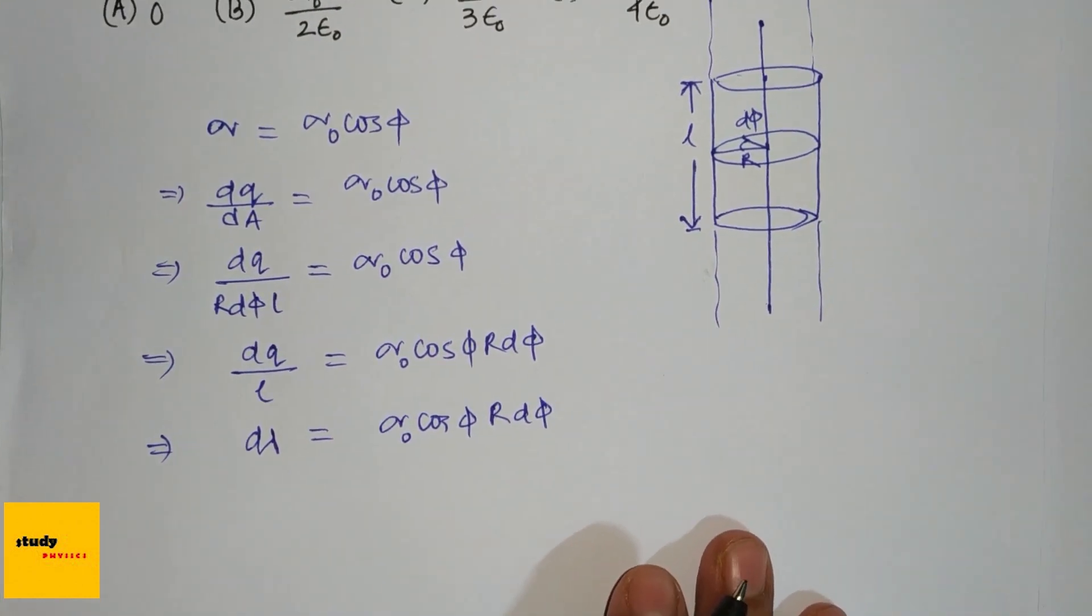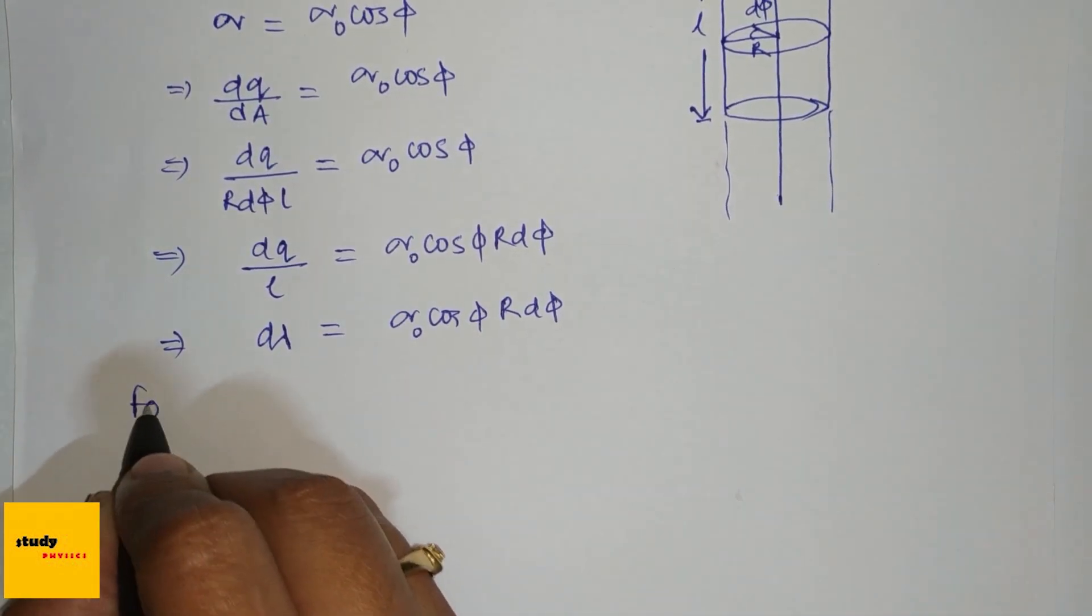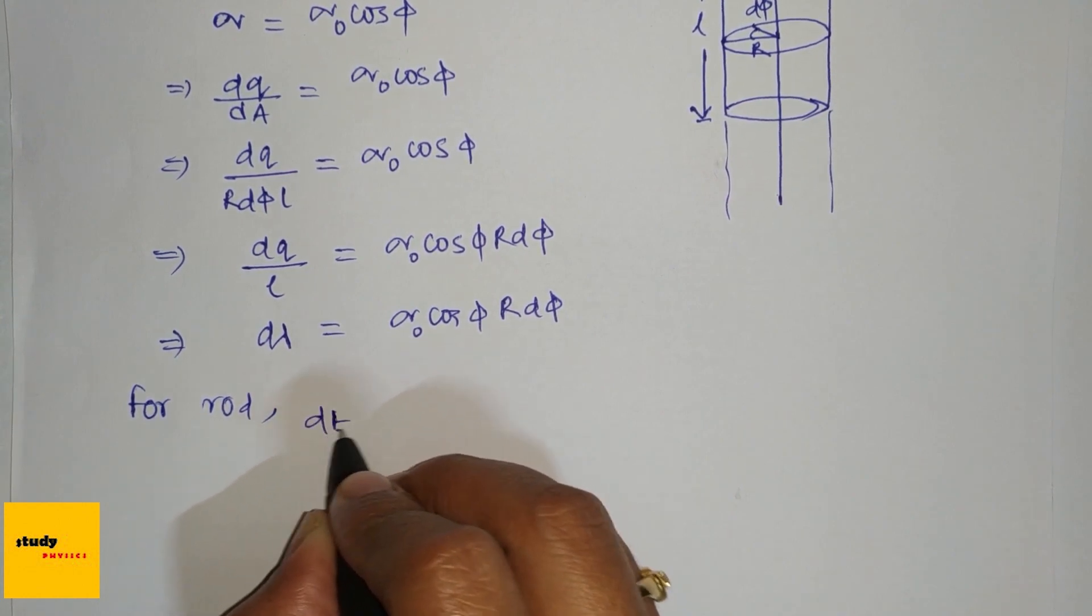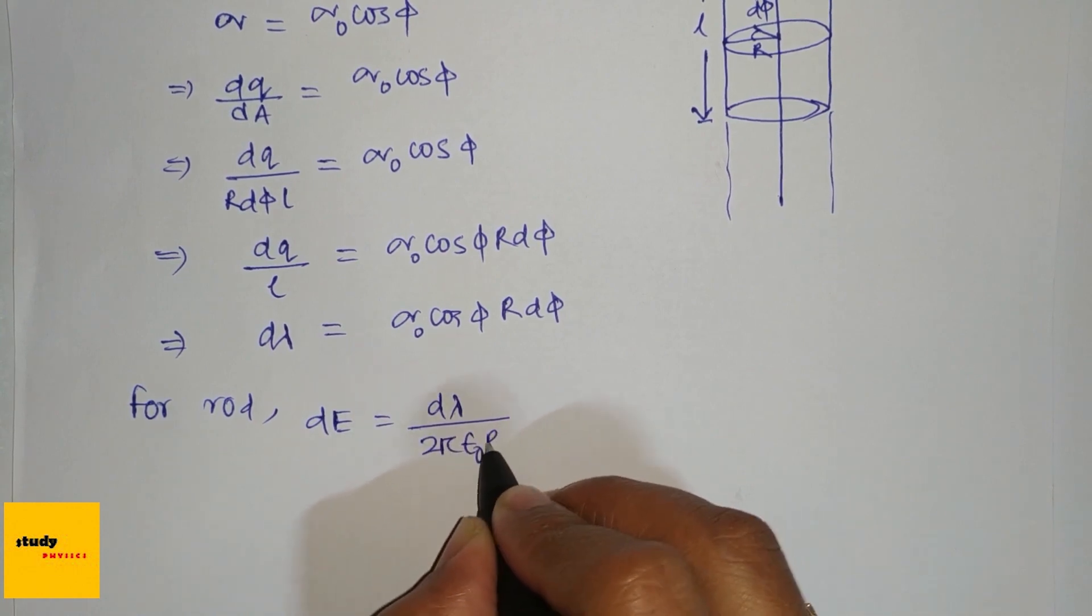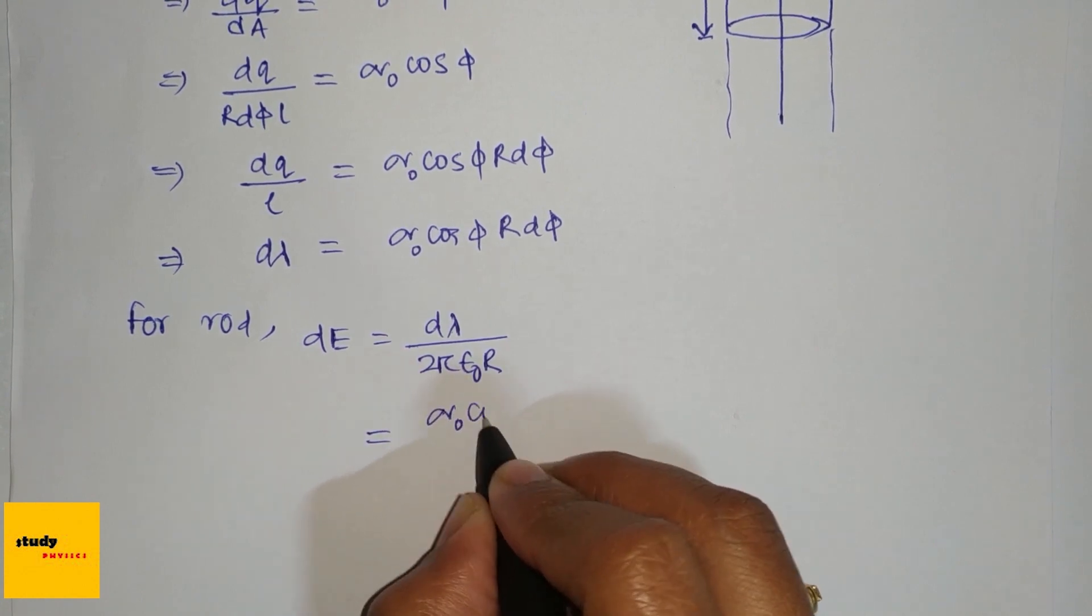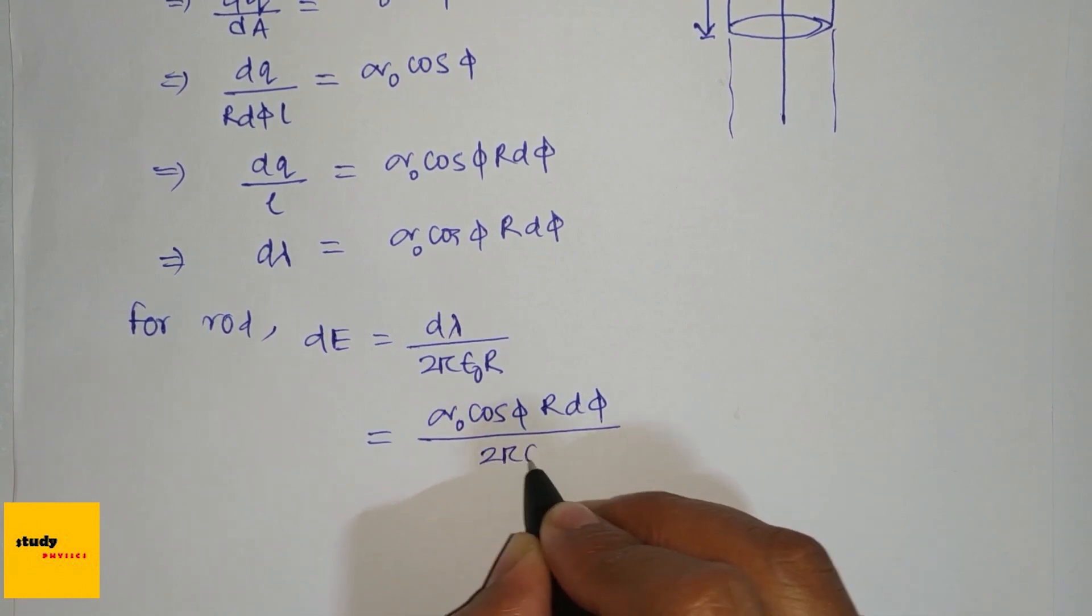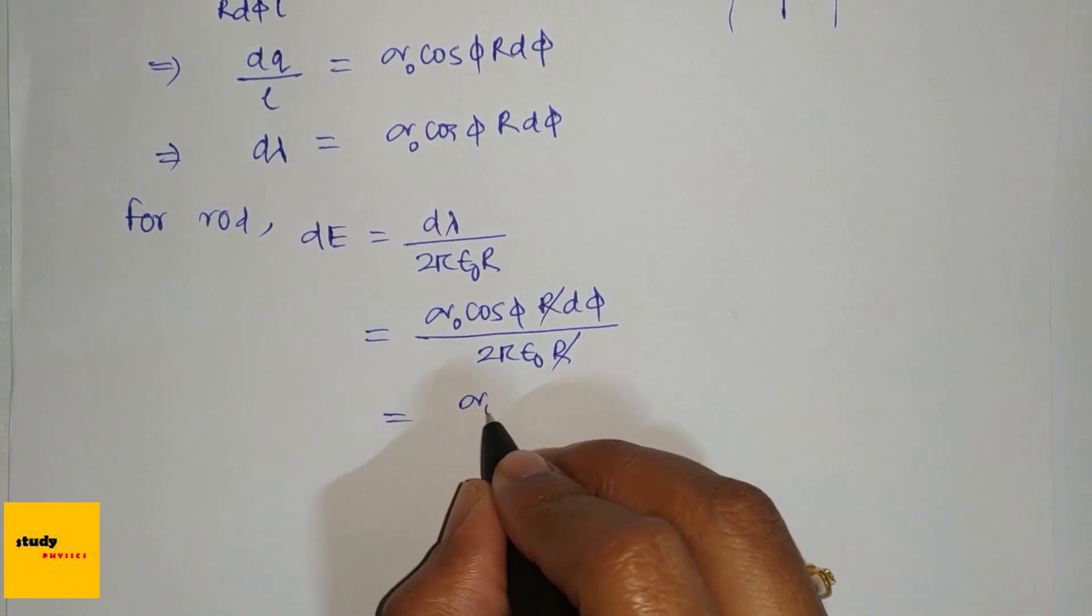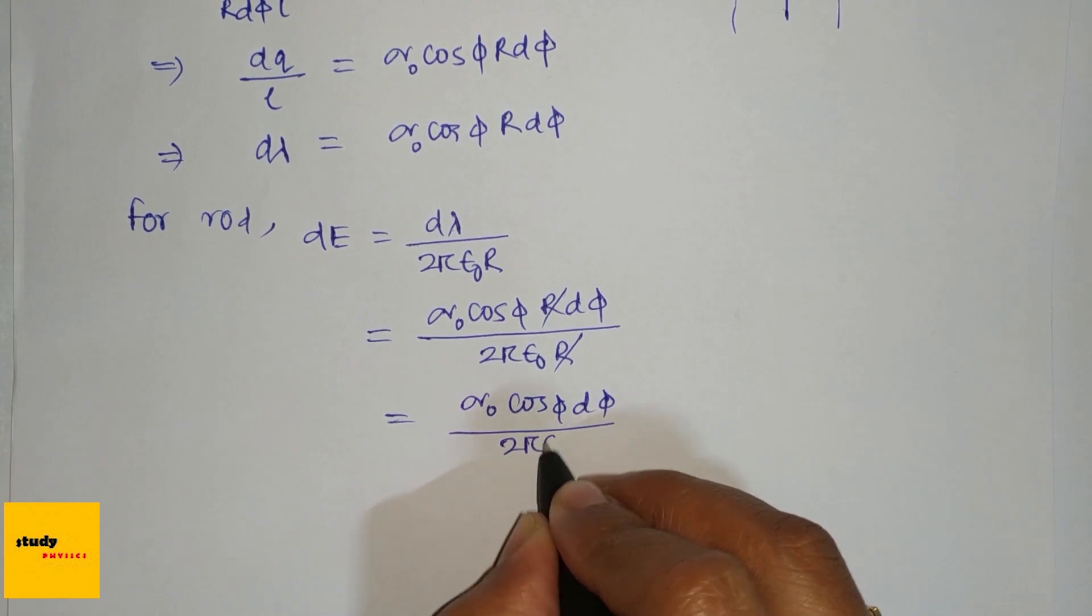Now let's just assume this is a rod. For a rod, we know the electric field dE is d(lambda) divided by 2π epsilon_0 r. Just put this value of d(lambda): sigma_0 cos(phi) r d(phi) divided by 2π epsilon_0 r. The r will cancel out, so we get sigma_0 cos(phi) d(phi) divided by 2π epsilon_0.